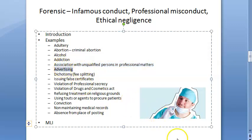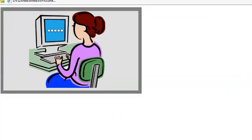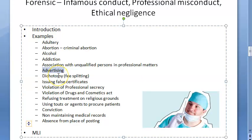The sixth A is advertising. Some advertising is permitted and some is not. Permitted advertising includes: a signboard mentioning the name, qualification, and speciality at the clinic or residence; a prescribing pad with name, qualifications, speciality, registration number, and contact details; and displaying fees at the clinic.